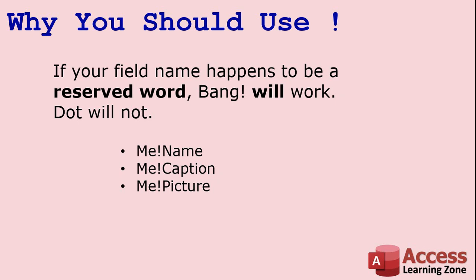You should be using bang, not dot. The first reason: if your field name happens to be a reserved word in Access, the bang will work but the dot will not. If you happen to name a field Name, Caption, Picture, or any of the dozens of reserved words, then me.Name, me.Caption, me.Picture will not work. The biggest example I get is people with a field called Caption in a photo database — when they say me.Caption, it refers to the Caption property of the form, not their field.